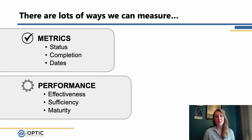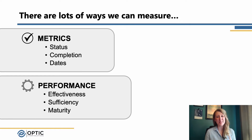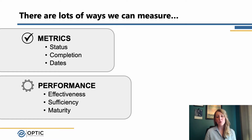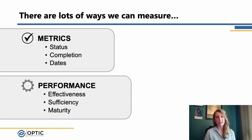I wanted to talk about how we can measure these capabilities, and there are a lot of different ways that we can do that. Today I wanted to break that into two primary categories that you'll see here on the slide — and they'll probably sound familiar because they're not new concepts — but really all of measurement falls into two primary categories: metrics and performance. For metrics, we're typically looking at tactical measures of progress against discrete activities, whereas for performance, we're really trying to look at the strategic measure of progress against business goals, looking at how effective our capabilities are, not just that something is in place.